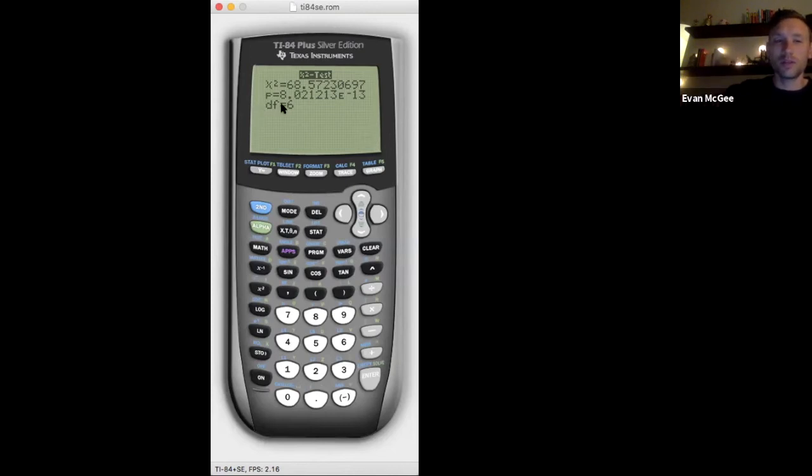Another thing to make a note of here is this is not a p-value of 8.0. This e to the negative 13 moves this decimal 13 places to the left. So this p-value is actually 0.0000008. So it's a very, very small p-value.